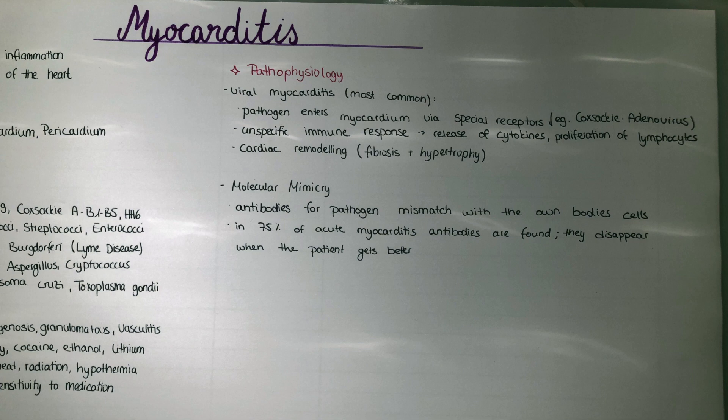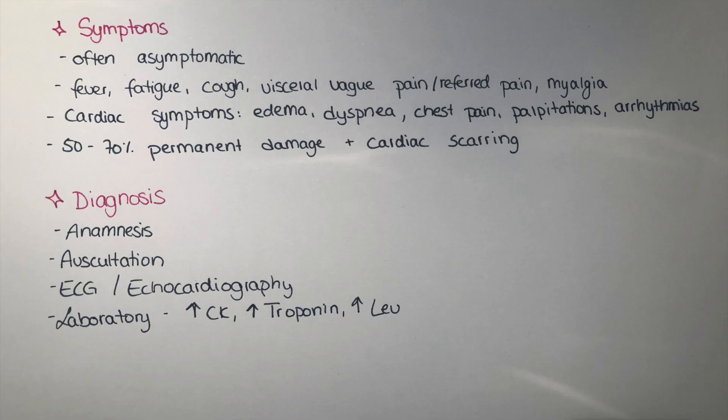Now let's talk about the different symptoms. Myocarditis is often asymptomatic. It is often seen in young adults who are affected a few days to around two weeks after a viral infection. Sometimes they present with fever, fatigue, cough, pain in the extremities, and myalgia — a general feeling of malaise. It can mimic a common cold or a severe flu.